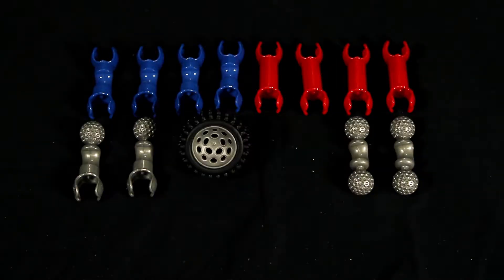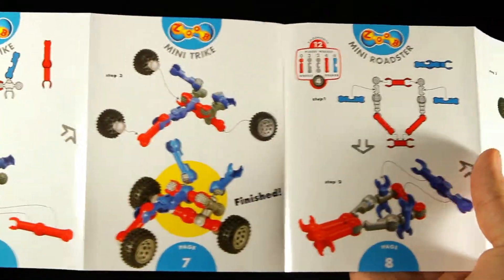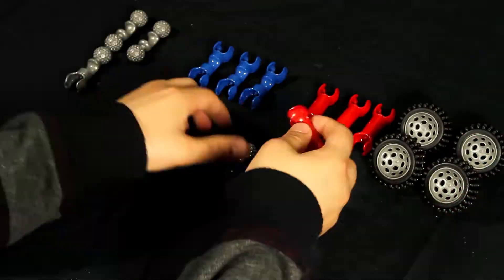Inside the box you'll get 12 ZOOB pieces, 4 rugged rubber tires, and step-by-step picture instructions to help you create 5 different mini vehicles that really roll.